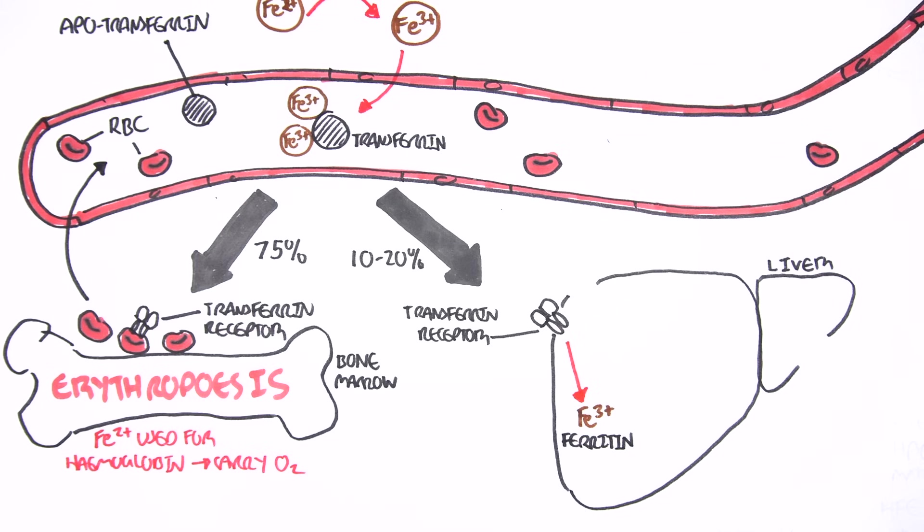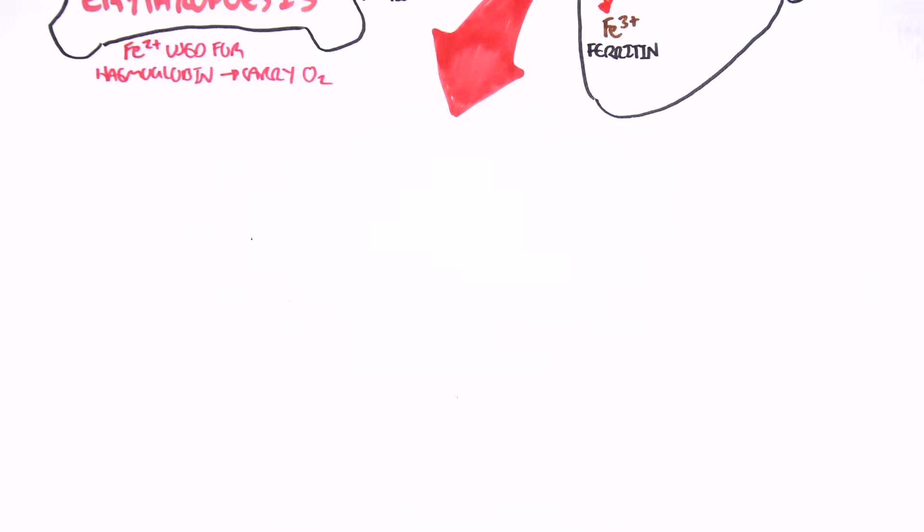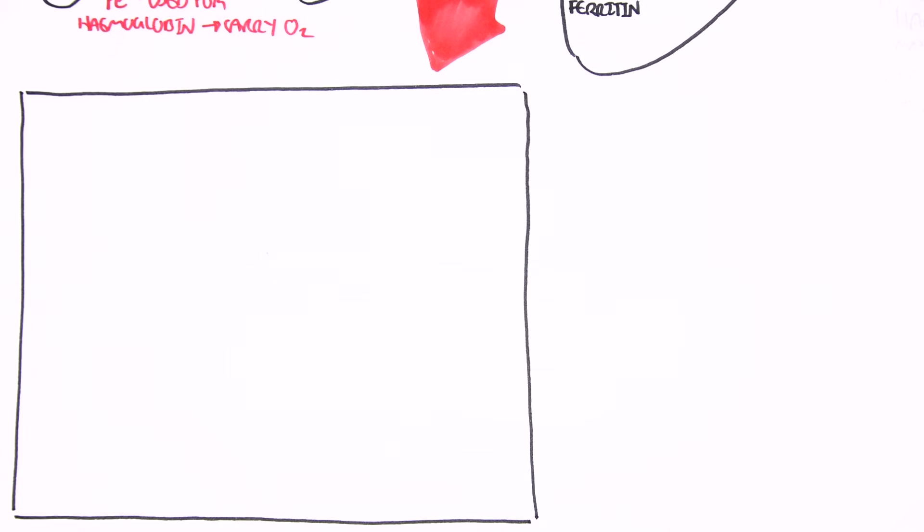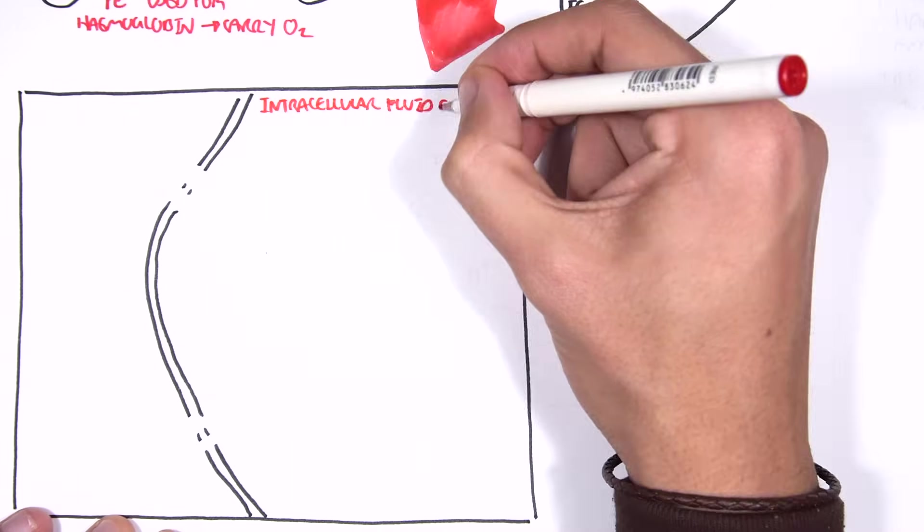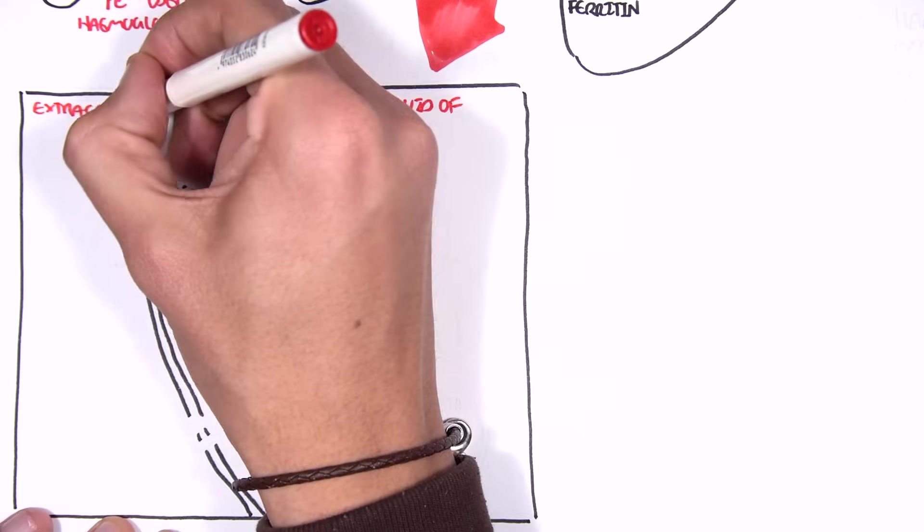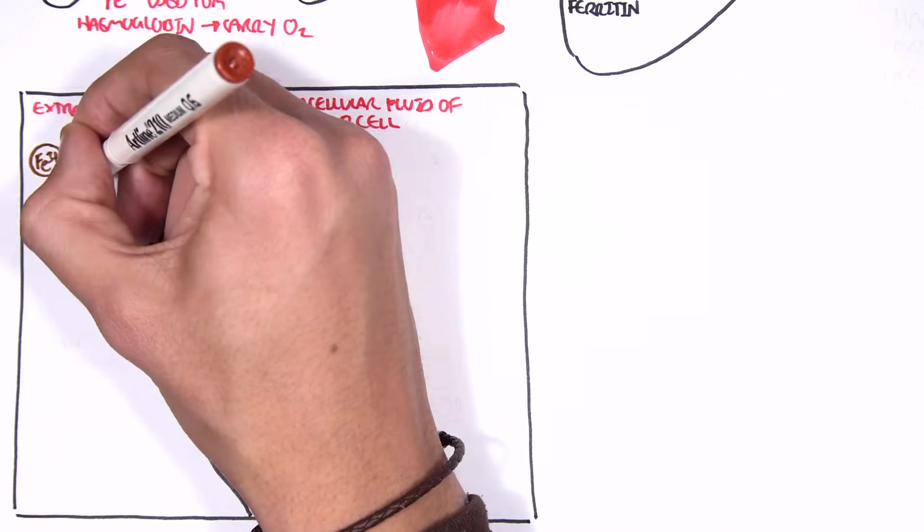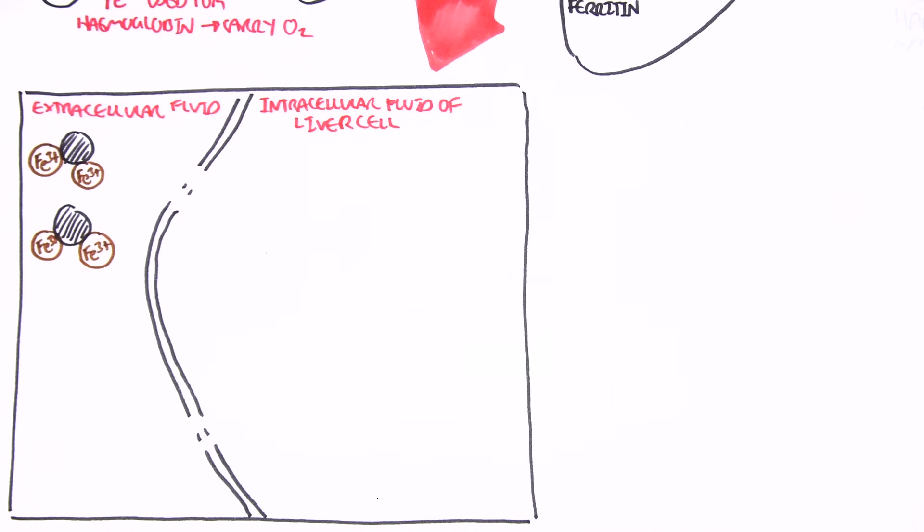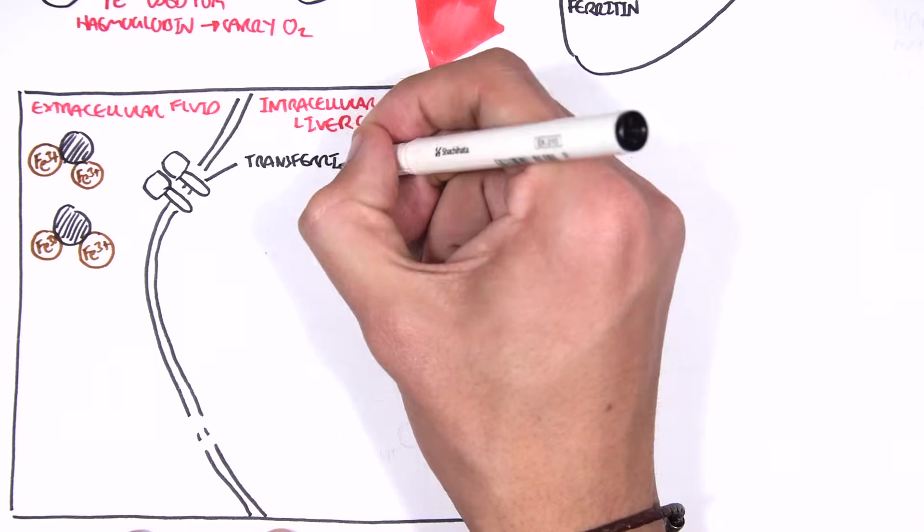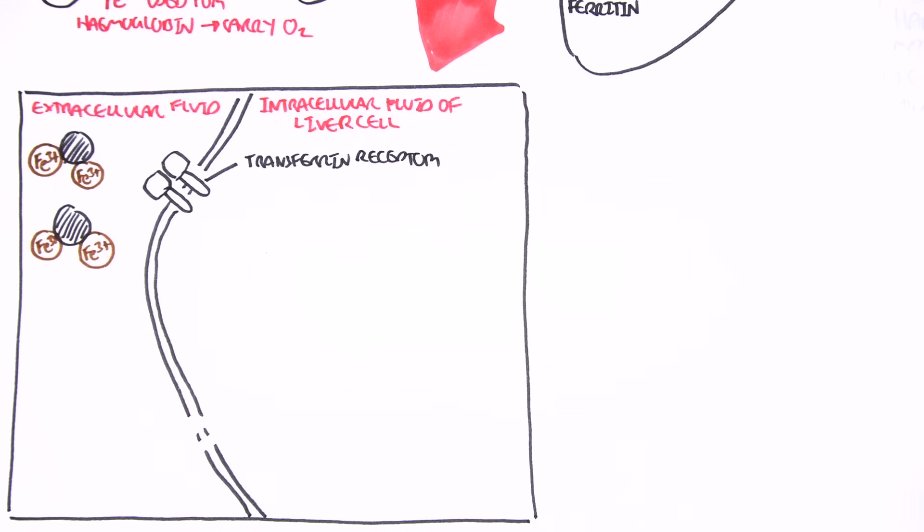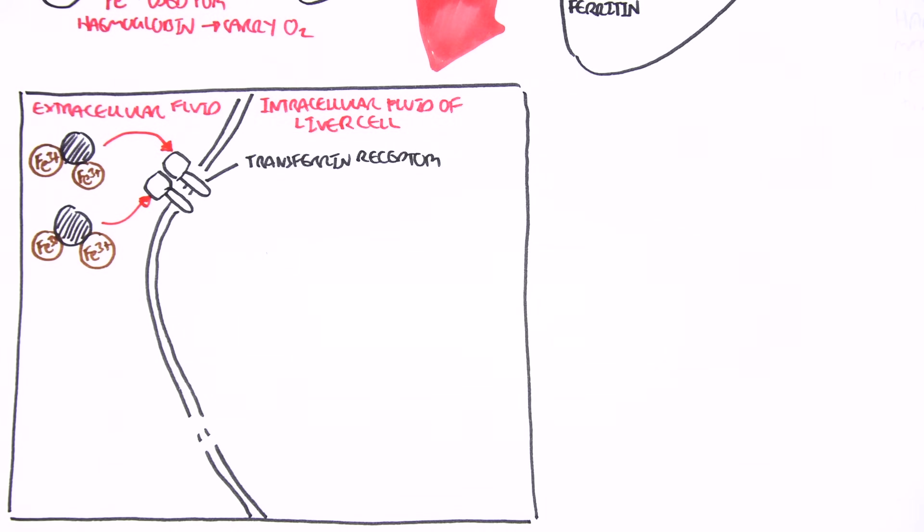Transferrin, now, let's have a closer look at how transferrin binds to the transferrin receptor on the cells, and how iron is stored within these cells. So, let's zoom into this area here. Here, we have the intracellular fluid of the liver cell. And then, we have the extracellular fluid of the liver cell. Here, we have transferrin bound, which has two ferric irons on each of them. And, here, we have our transferrin receptor on the outer cell membrane.